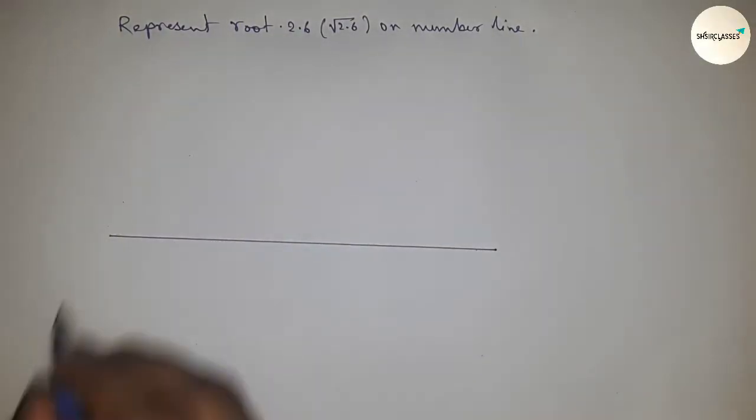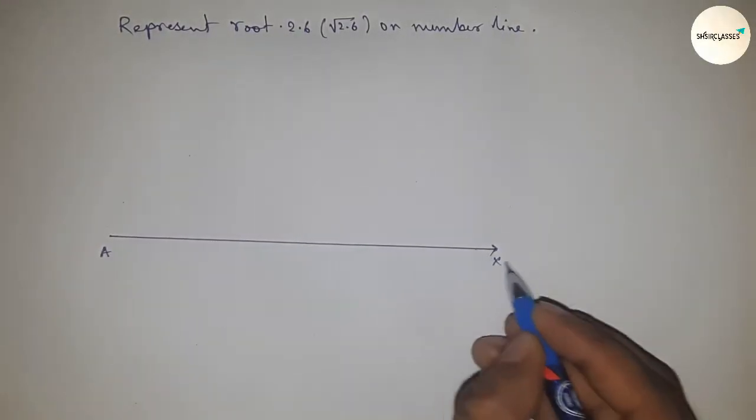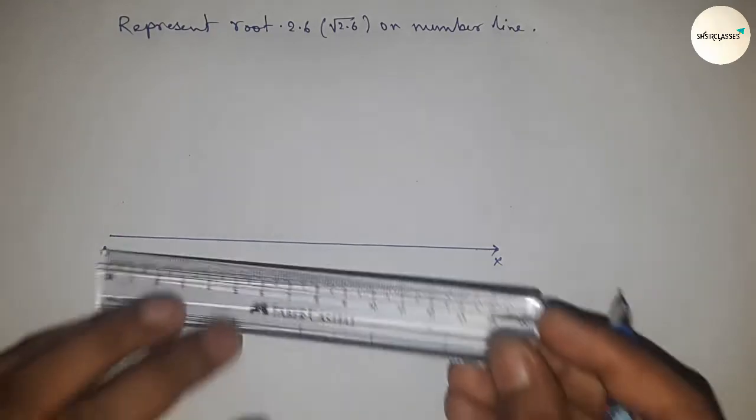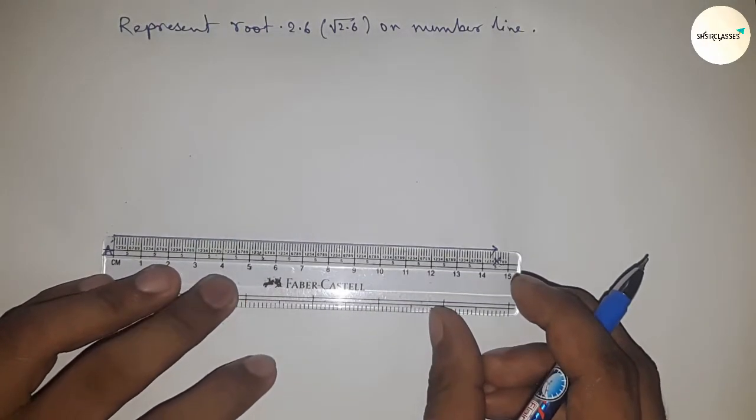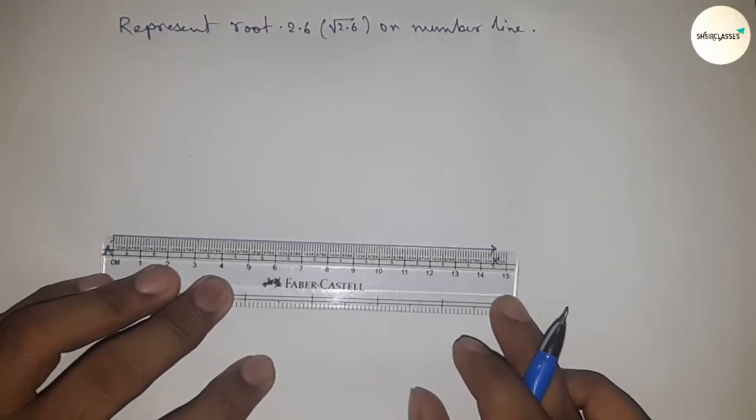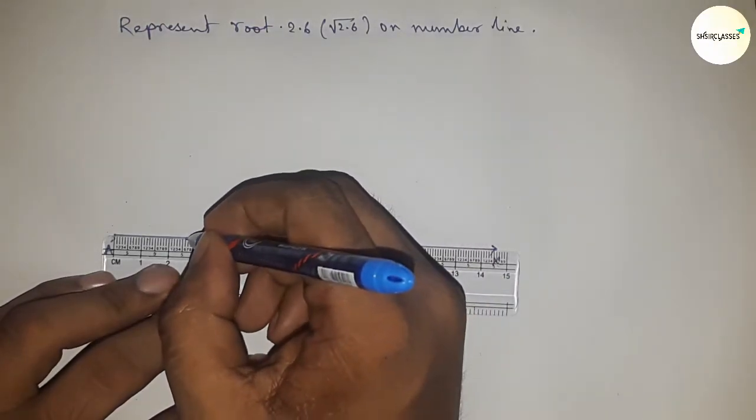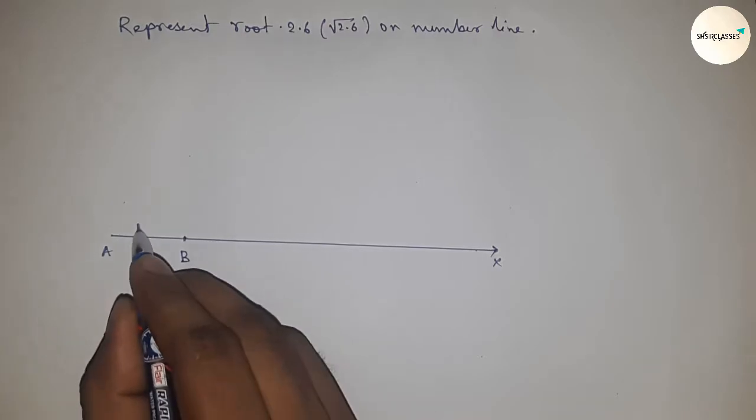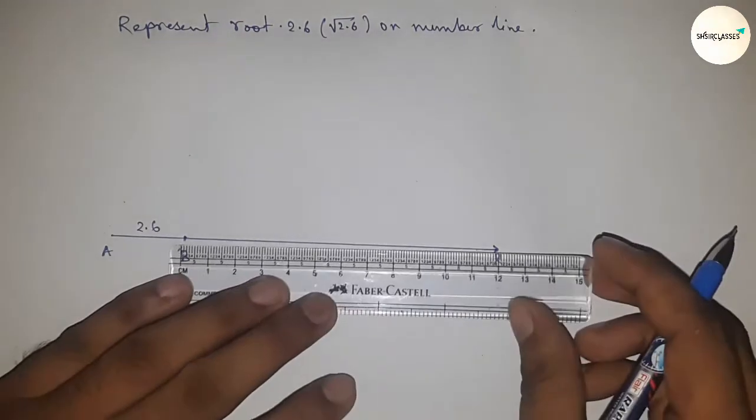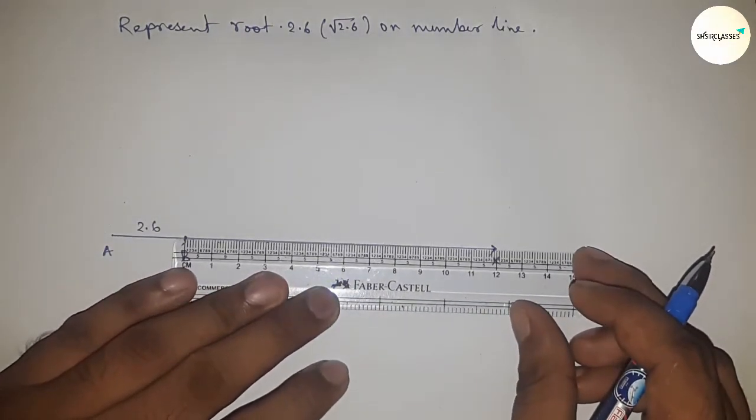First of all, drawing a line of array length, and this is the x-axis line. Next, taking a distance of 2.6 centimeters by using a scale. So this is 2.6 centimeters and this is point B, so AB is 2.6 centimeters.